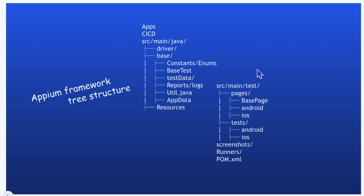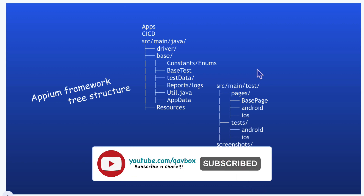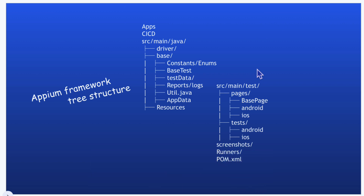I have created a representation where we list all the components of an Appium framework, which we will keep as our reference point while building that framework. It may vary depending on how skilled people are and what different concepts they are implementing, but I'm going to show the core concepts of the Appium framework so it would help you get started with any framework you will encounter. This is a Maven framework — I have implemented the Maven concept here.